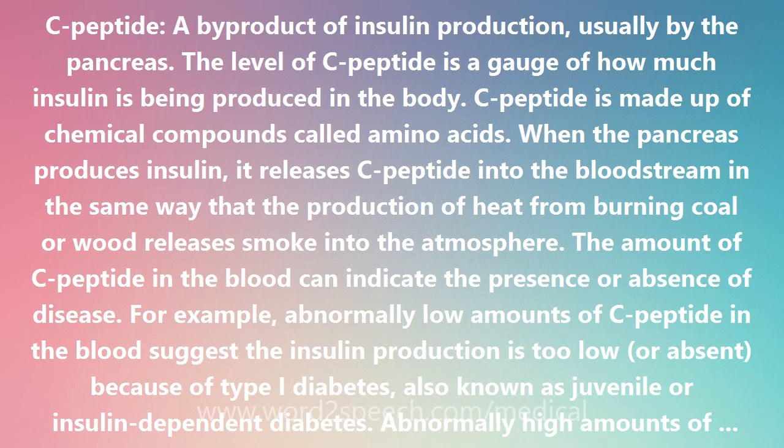However, in a person with diabetes, a normal level of C-peptide indicates the body is making plenty of insulin but the body is just not responding properly to it. This is the hallmark of type 2 diabetes, adult insulin-resistant diabetes.